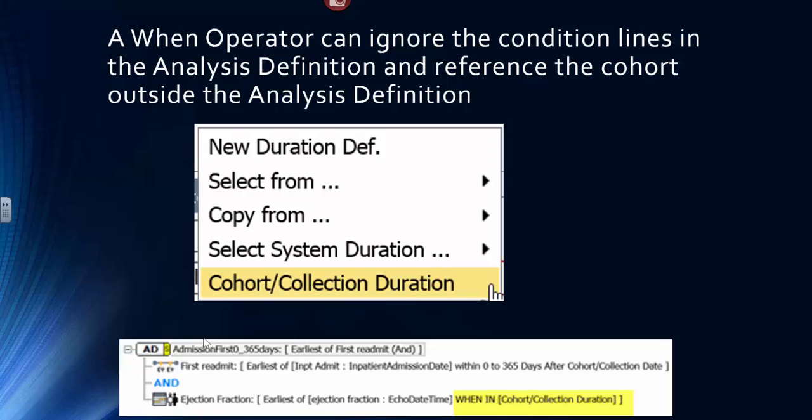And then you end up with an analysis definition that has first readmission and an ejection fraction when in the cohort collection. It's pointing outside to the cohort itself. It wants to make sure there's an echo during that original hospitalization outside, not the first readmission.